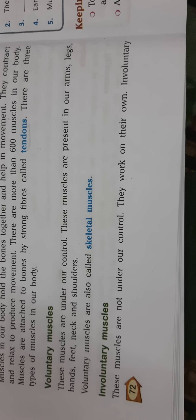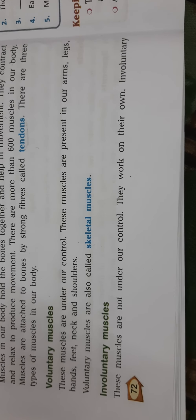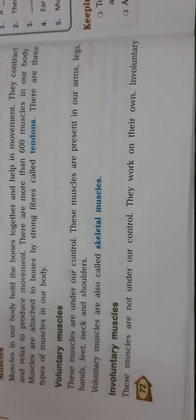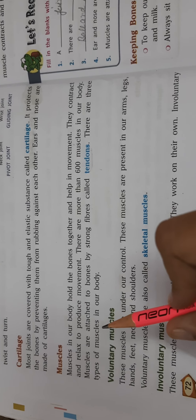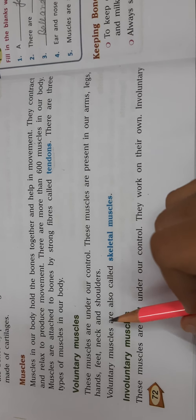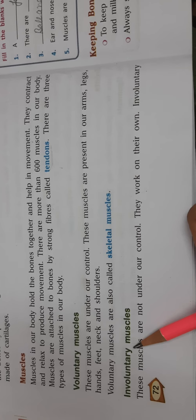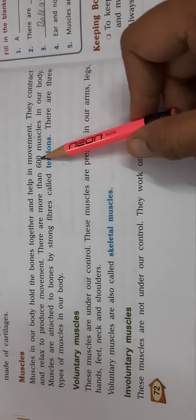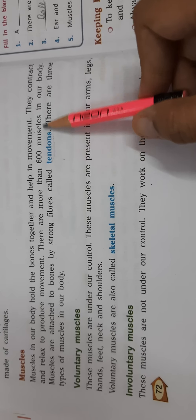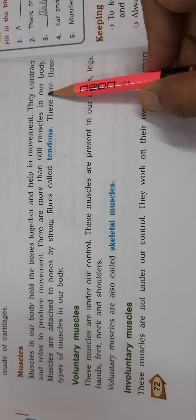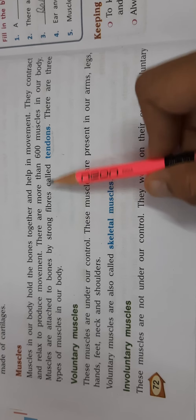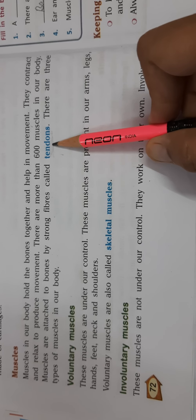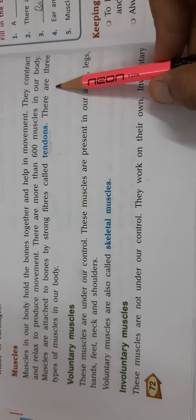Good morning, students. Today we will continue our chapter. In the last class we read about cartilages and muscles. Now we will read about types of muscles. There are more than 600 muscles in our body, and muscles are attached to bones by strong fibers called tendons. There are three types of muscles in our body.